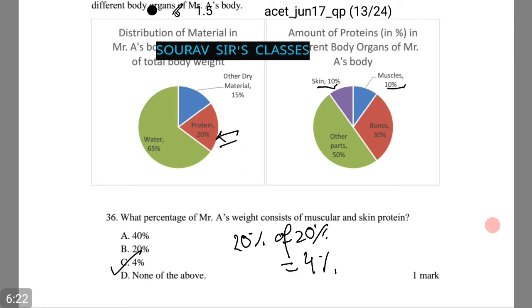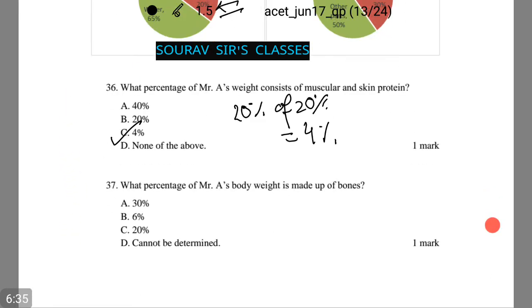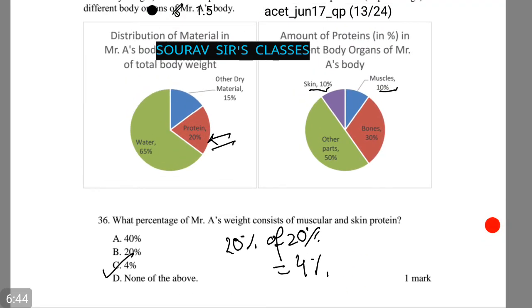First 20% is of protein and the next 20% is the summation of skin and muscles. Please do not confuse because this is a very easy sum and it is very scoring. Moving on, what percentage of Mr. A's body weight is made up of bones?